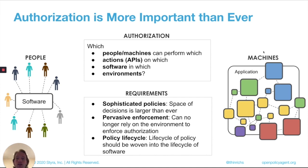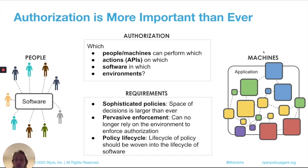If you think about authorization in this broader context of cloud and cloud-native and all those megatrends, there are a few pretty powerful and new requirements. One is that you need to be able to write pretty sophisticated policies. The space of all possible decisions is quite enormous these days, and you need more sophisticated policies to express whatever granularity you care about in order to make decisions. We're long gone from enforcing policies just at the firewall and the API gateway — now we want authorization enforced pervasively on every piece of software that gets released.